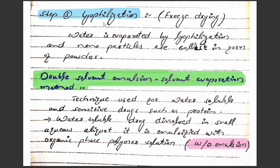In the fifth step, we perform lyophilization, where water is evaporated. Lyophilization is a process in which the liquid is first frozen and then high vacuum is applied to evaporate the water. After evaporation of the water, we get nanoparticles in the form of powders. The next method is the double emulsion solvent evaporation method.